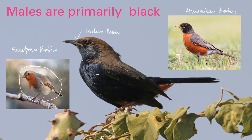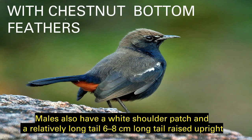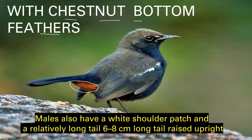Today we are going to discuss about the Indian robin. This is a male, and in males they are primarily black in color. They have chestnut brown bottom feathers here. This is a very different feature of the Indian robin male bird. One another remarkable distinguished physical trait of this bird is this patch of white color feathers.